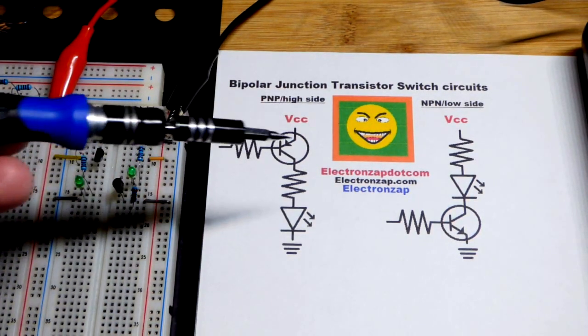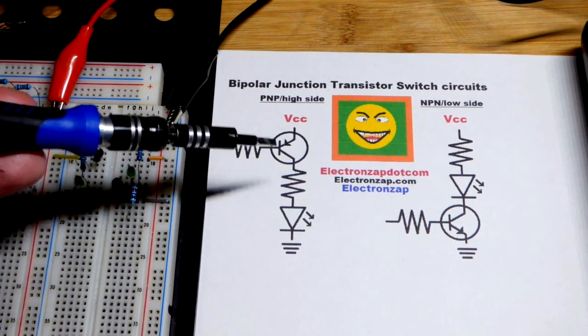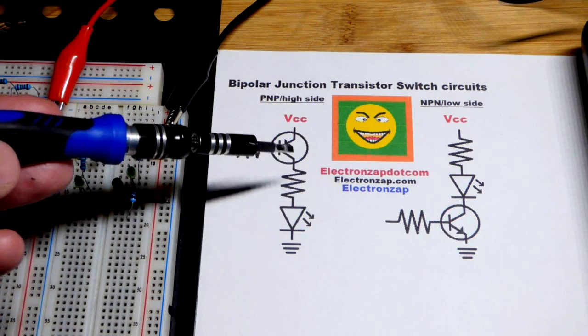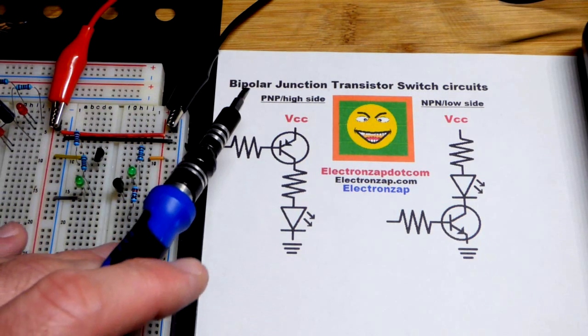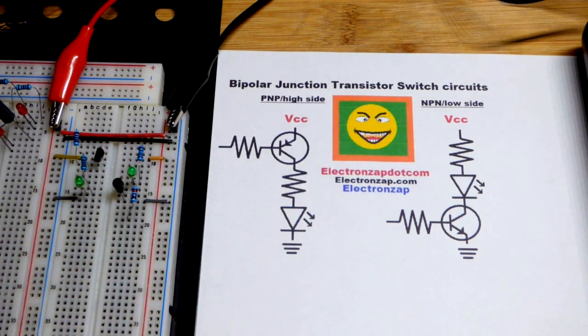So now in the last video, we used a push-button switch on the high side of a load and on a low side of a load. In this video, we're going to look at the bipolar junction transistor switch circuit.